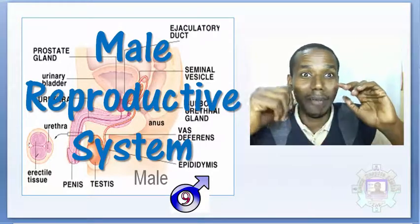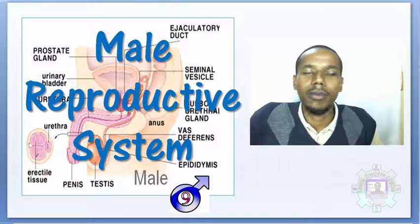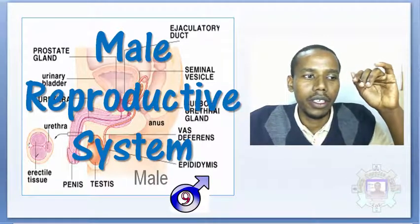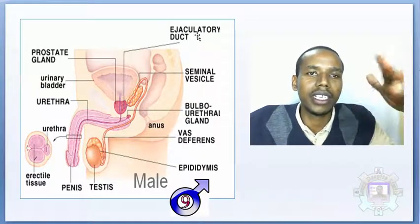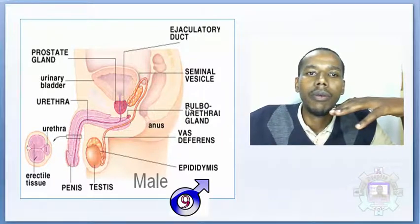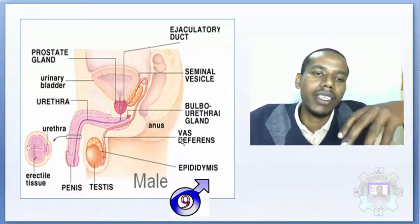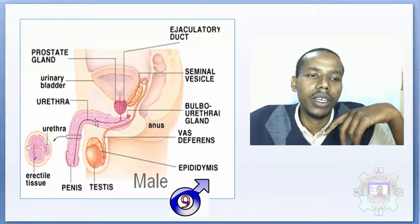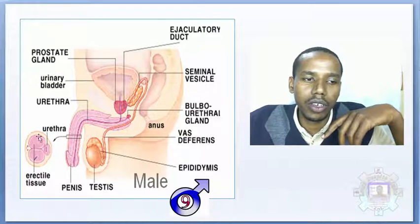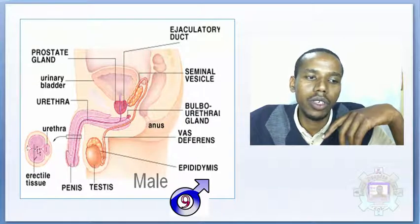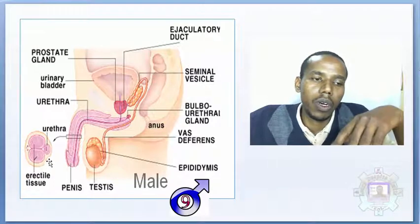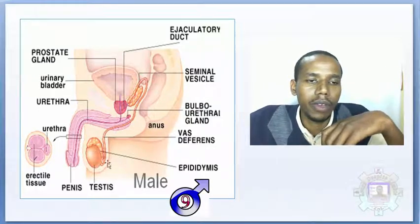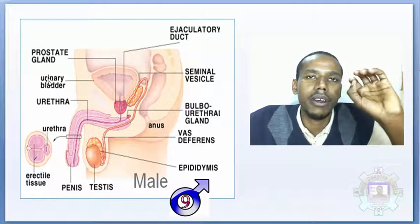Today we are going to talk about the male reproductive system. It is made of several parts. As you can see in the background, there is a penis, the testicles, ejaculatory duct, vas deferens, seminal vesicle, bulbourethral gland, vas deferens, urinary bladder, prostate gland, urethra, and erectile tissue. The testicles and epididymis together make up the male reproductive system.